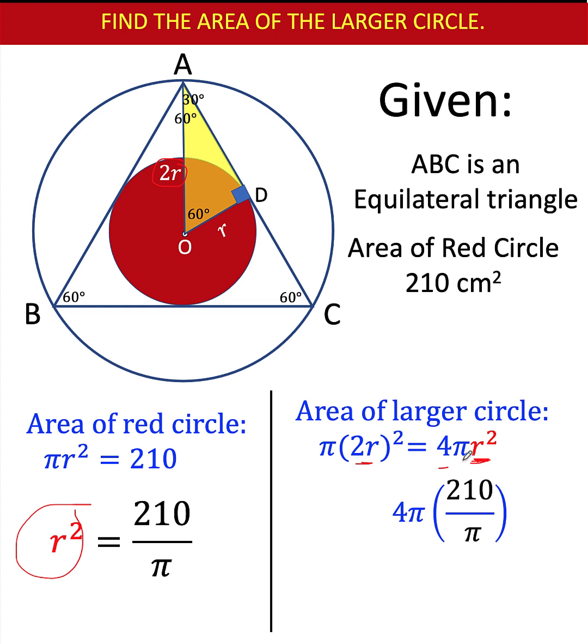And therefore, we now arrive at 4π, replace r² by 210/π, which is this value here. Simplifying, we can cancel out this π and this π. And so 4 times 210 is 840, and the unit is centimeter squared, because this is now the area of the larger circle. So for our final answer, the area of this larger circle is 840 square centimeters.